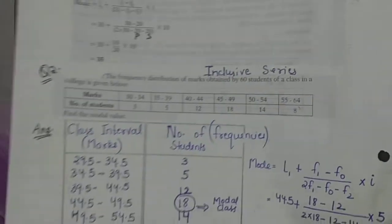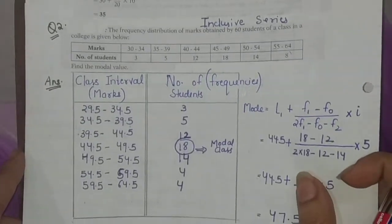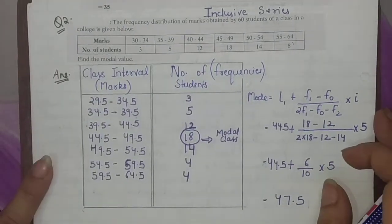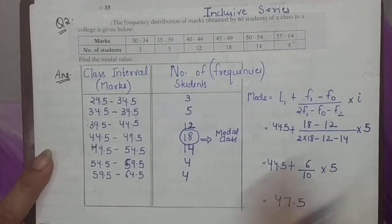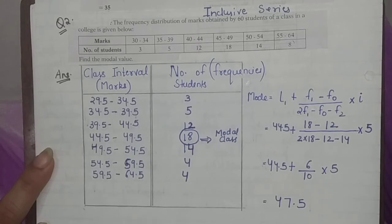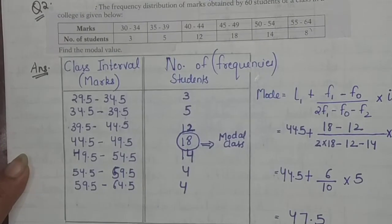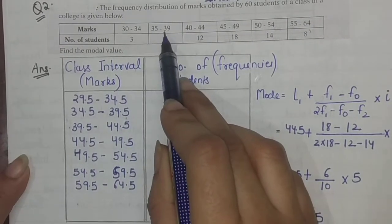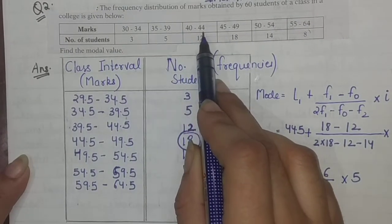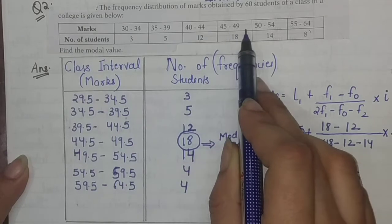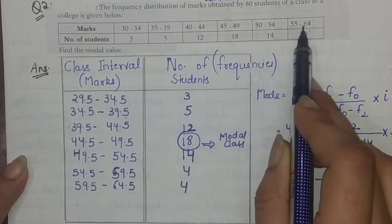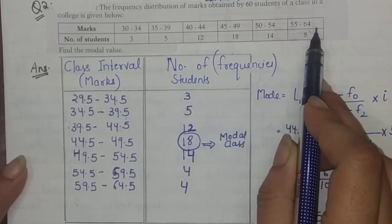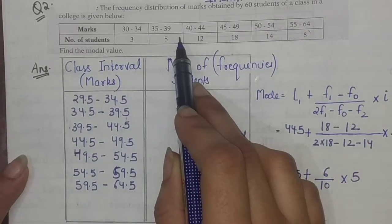To understand this method better, I have taken up the same question from my previous video, where the frequency distribution was given as: 30–34, 35–39, 40–44, 45–49, 50–54, and 55–64.